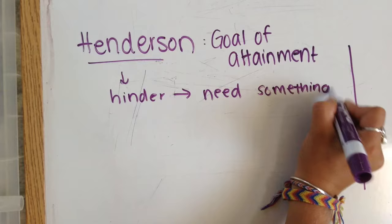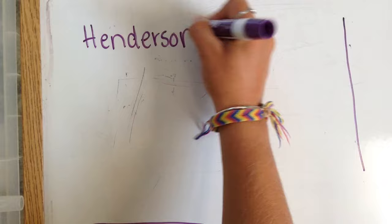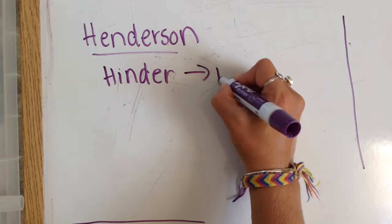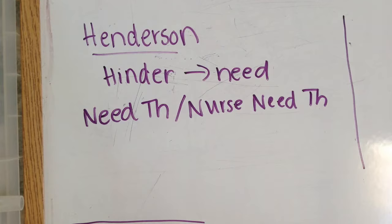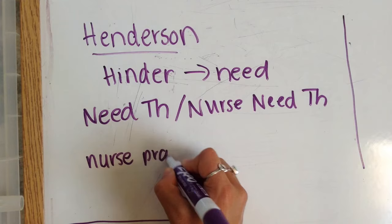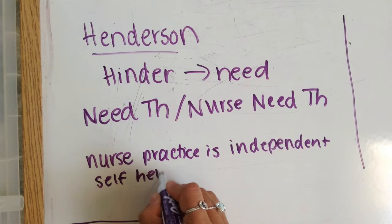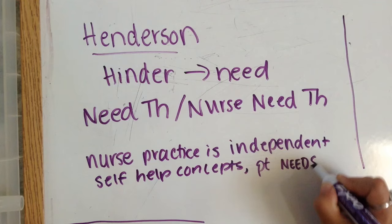You need something if you're hindered. So, Henderson's theory is the need theory, because 'hinder' sounds like 'hindered.' If you're hindered in life, you need something. This tells you that nursing practice is independent and has self-help concepts, because the patient needs help because he's hindered — hindered for Henderson.